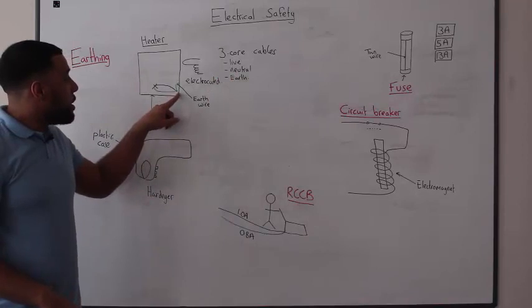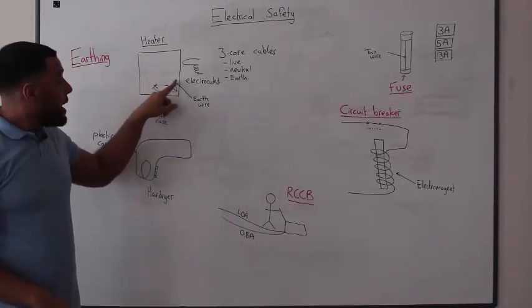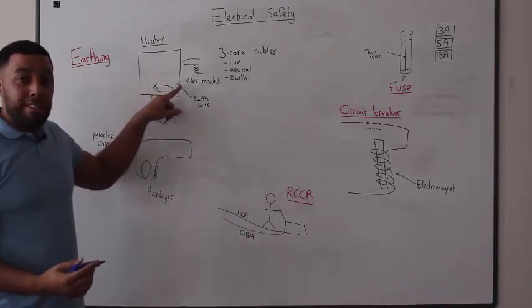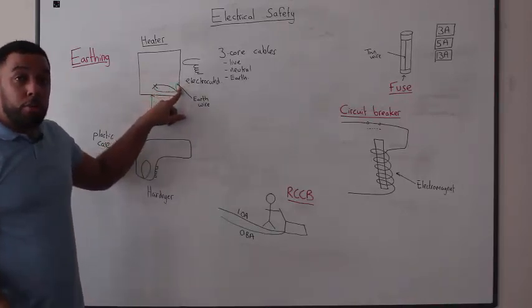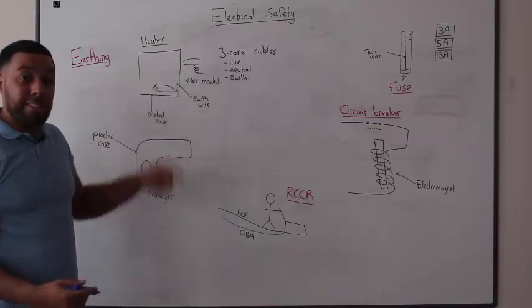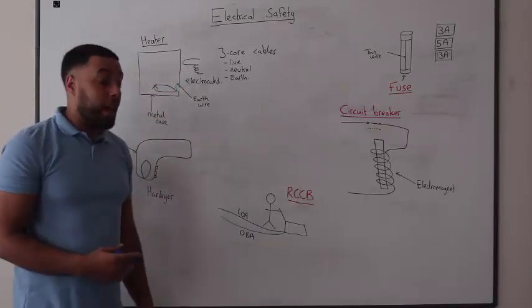The purpose of the earth wire is to provide a safe route for the current to be taken to the ground underneath our house, meaning that the appliance is still safe to touch and we don't get electrocuted.